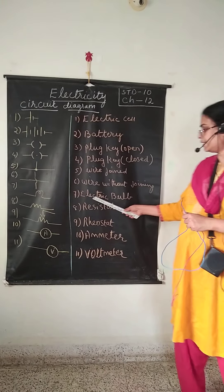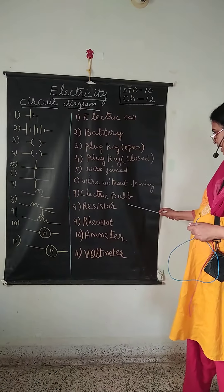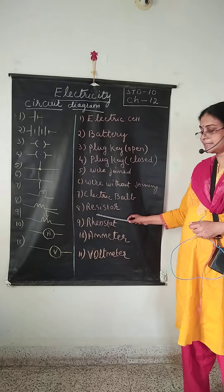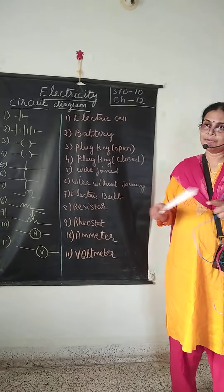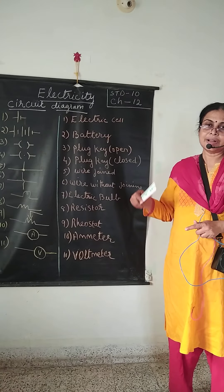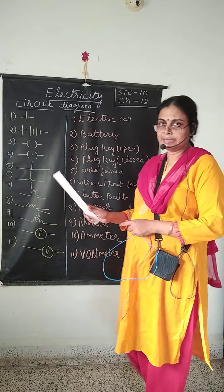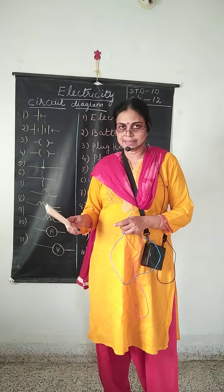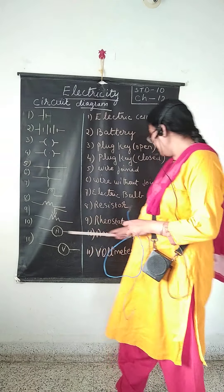Now comes the electric bulb, which you are familiar with. And the resistor — a resistor is normally a wire which resists the flow of current. That is called the resistor, and resistance wire is used for this.